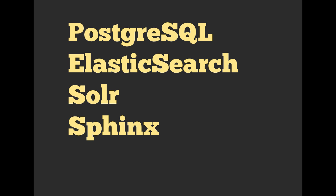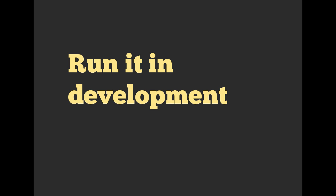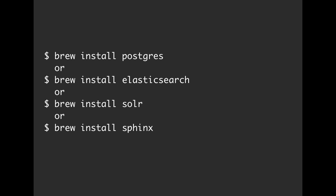So if you're running a production-level application and search is a large part of it, you should consider using one of these. You're also going to want to run it in development. You can install all of those on Mac using Brew — Brew install Postgres, Brew install Elasticsearch, Brew install Solr, Brew install Sphinx.